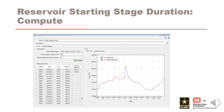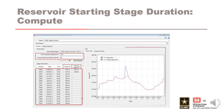Enter the pool change threshold and the typical high pool duration and click Compute. After computing, the stage gauge plot is populated and the stage data table is as well. In the stage data table, you can see that there is the stage and the starting stage. The starting stage are the selected values that go into the final duration curves. Highlighted is an example of some of the filtered stages where some days of the stage have been removed based on the pool change threshold and the typical high pool duration parameters.